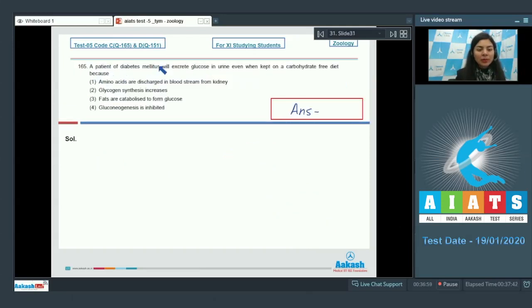Question 165: A patient of diabetes mellitus will excrete glucose in urine even when kept on a carbohydrate-free diet because: amino acids are discharged in bloodstream from kidney, glycogen synthesis increases, fats are catabolized to form glucose, or gluconeogenesis is inhibited. The case presented is of a patient of diabetes mellitus who is excreting glucose in urine and is on a carbohydrate-free diet.